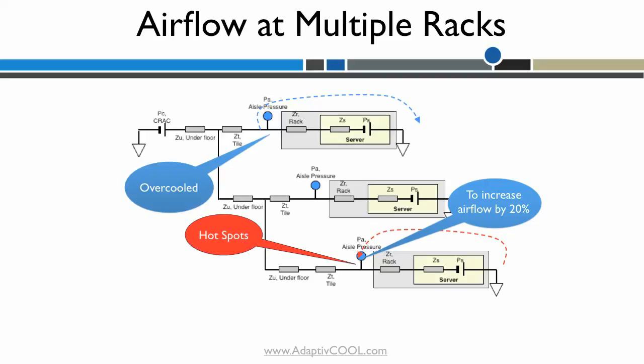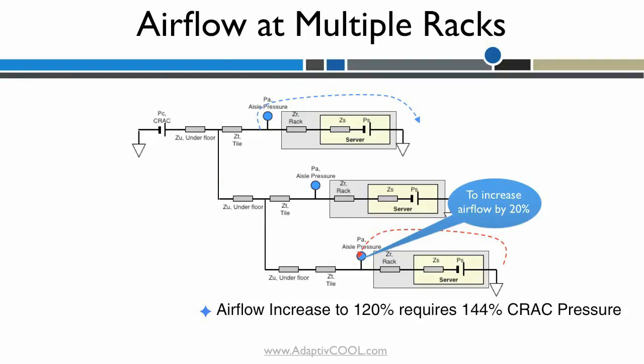Since the pressure required is the square of air flow, to achieve 20% more air flow, the CRAC fan pressure output needs to increase by 44%.